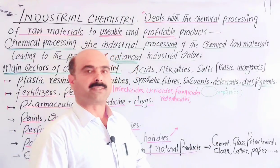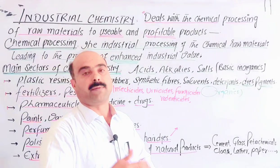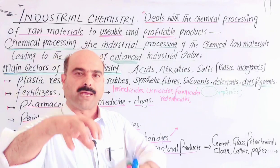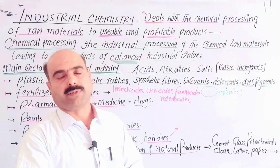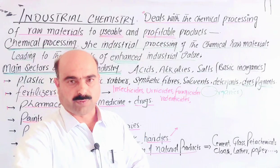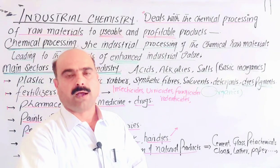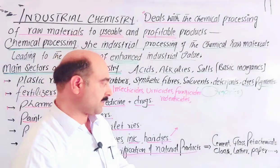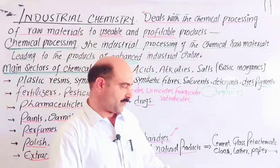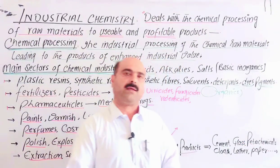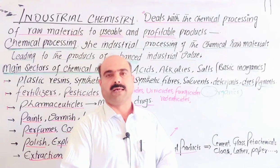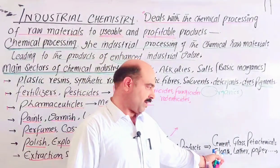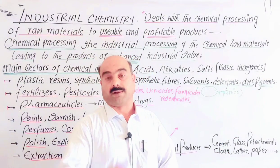The cement industry produces cement of different qualities. There are also types of quick-setting cement. The glass industry, petrochemical industry — which processes petroleum — cloth industry, cloth preparation, leather industry, paper industry, and rubber industry are all among the major sectors covered in industrial chemistry.